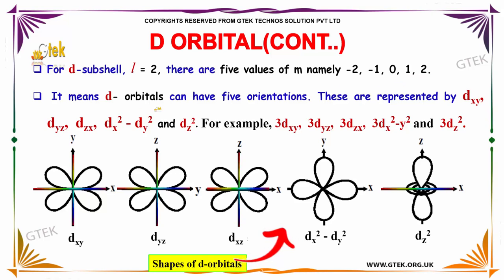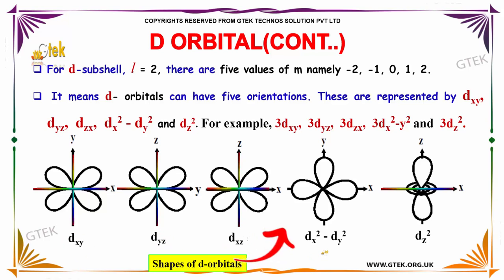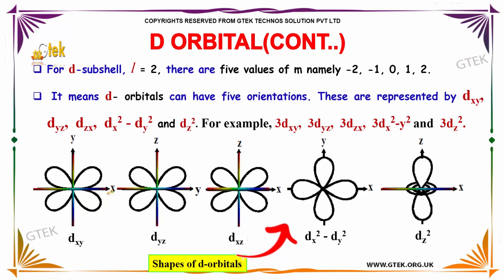This means the d-orbitals will have 5 different orientations. These are represented by dxy, dyz, dxz, dx²-y², and dz². And this is the typical example.